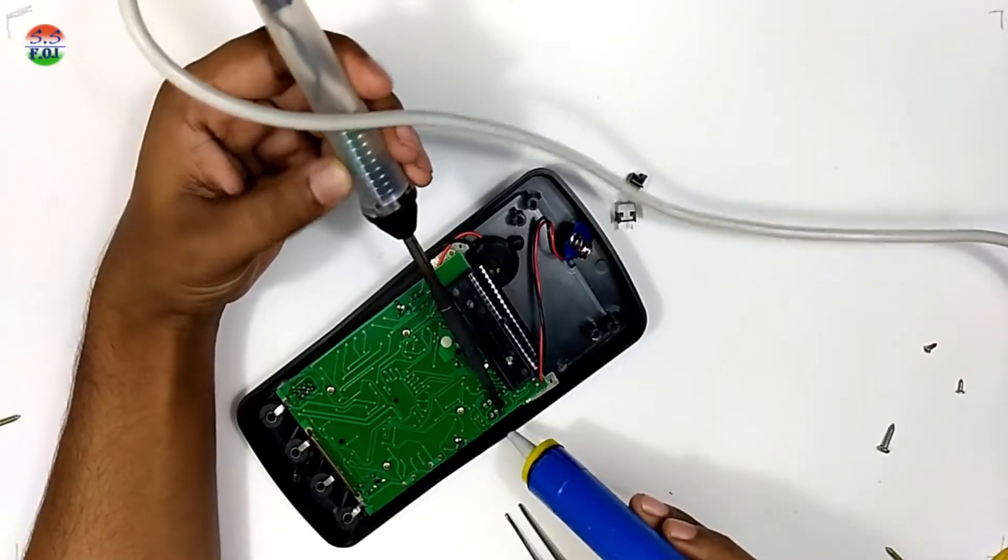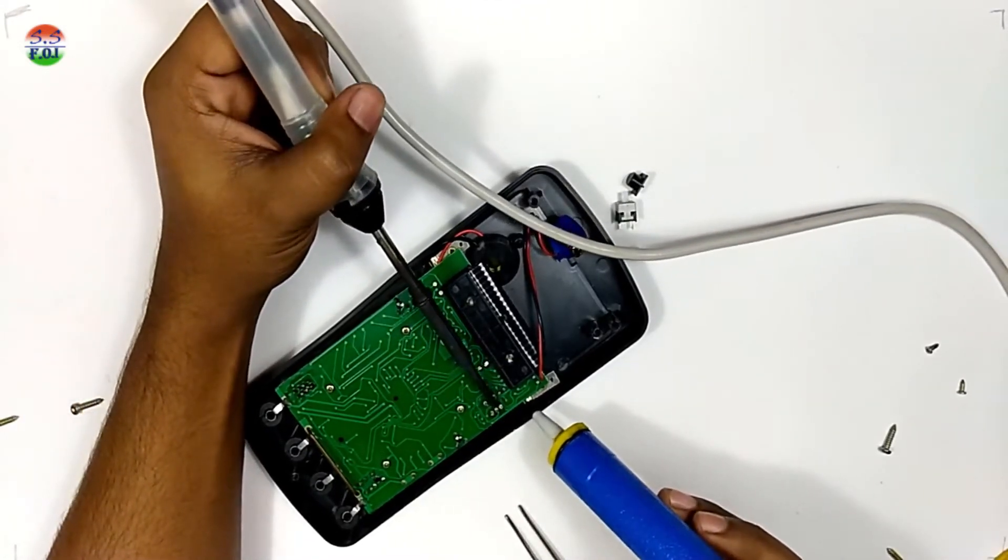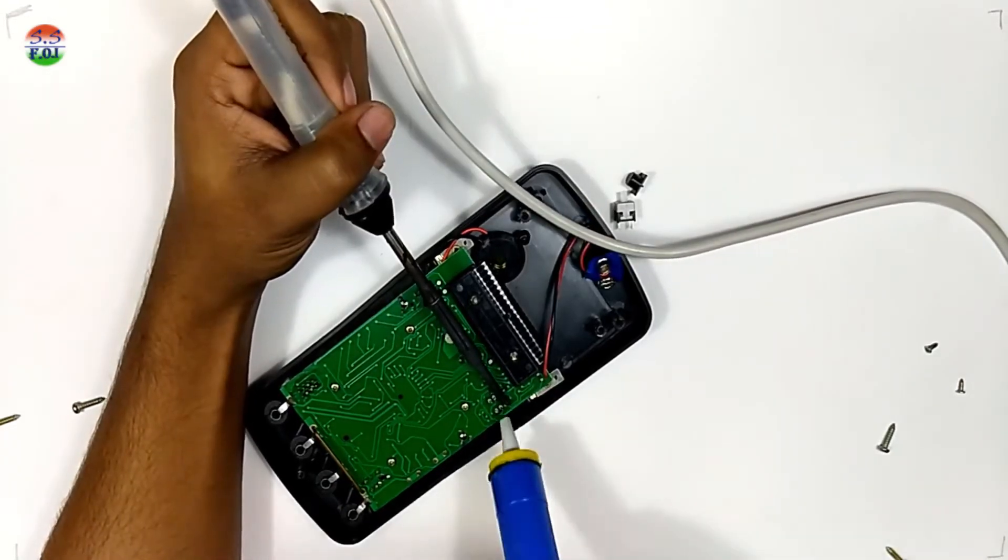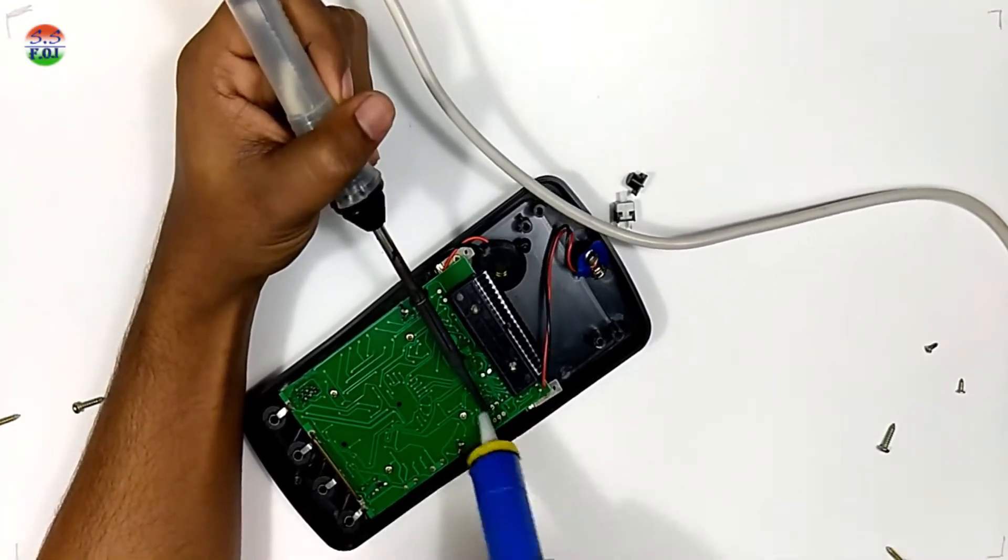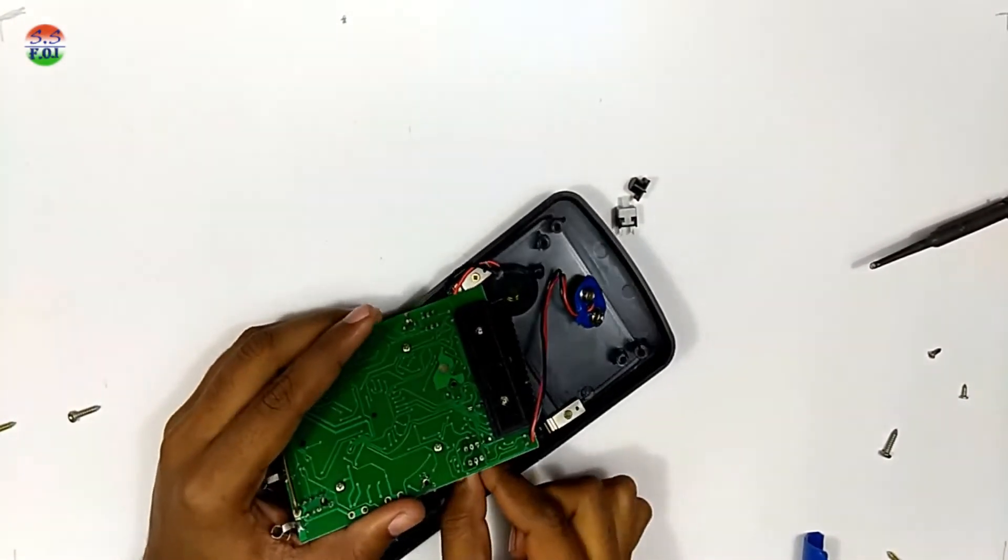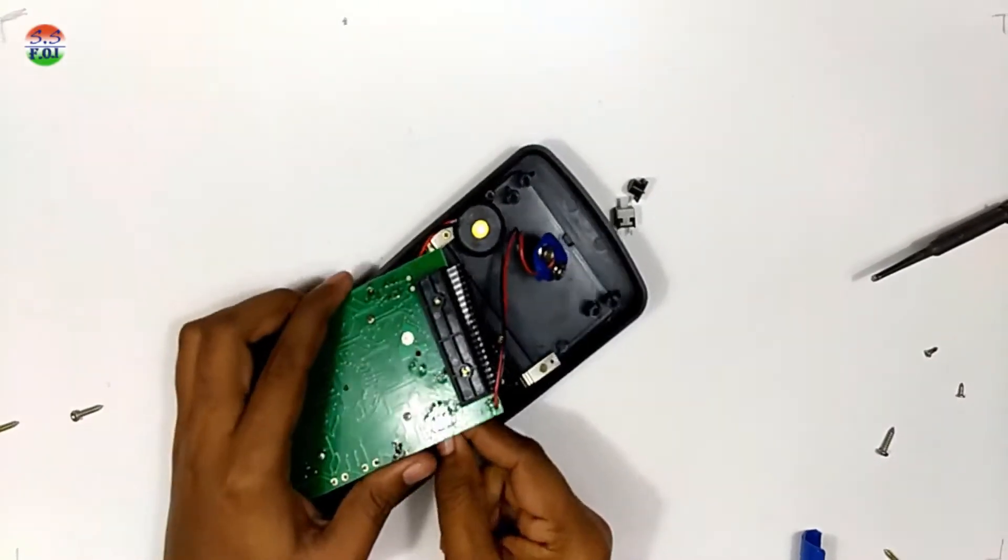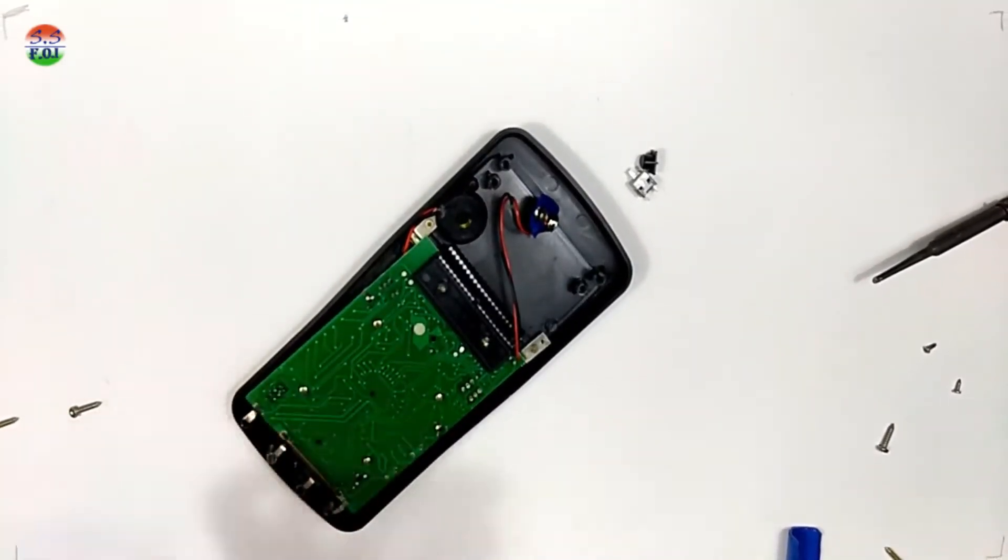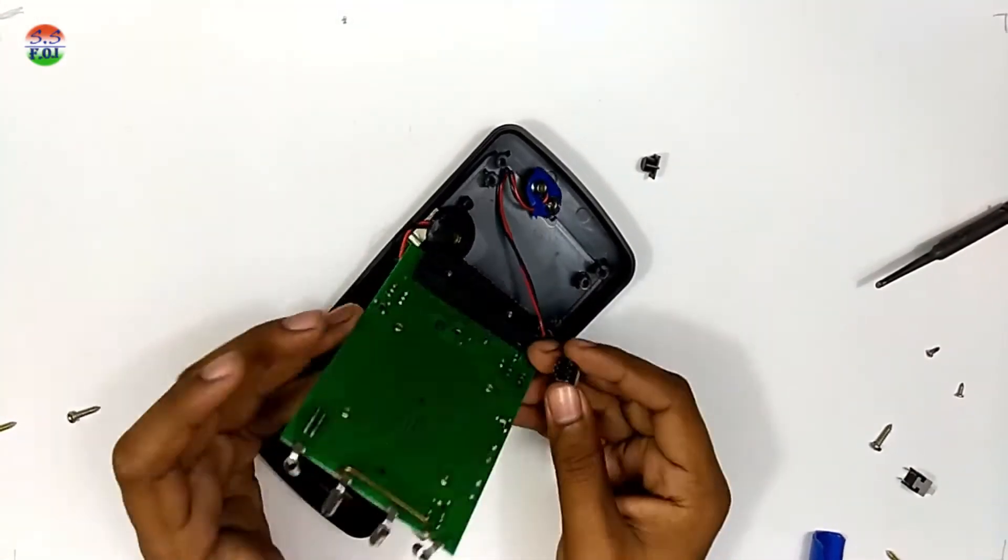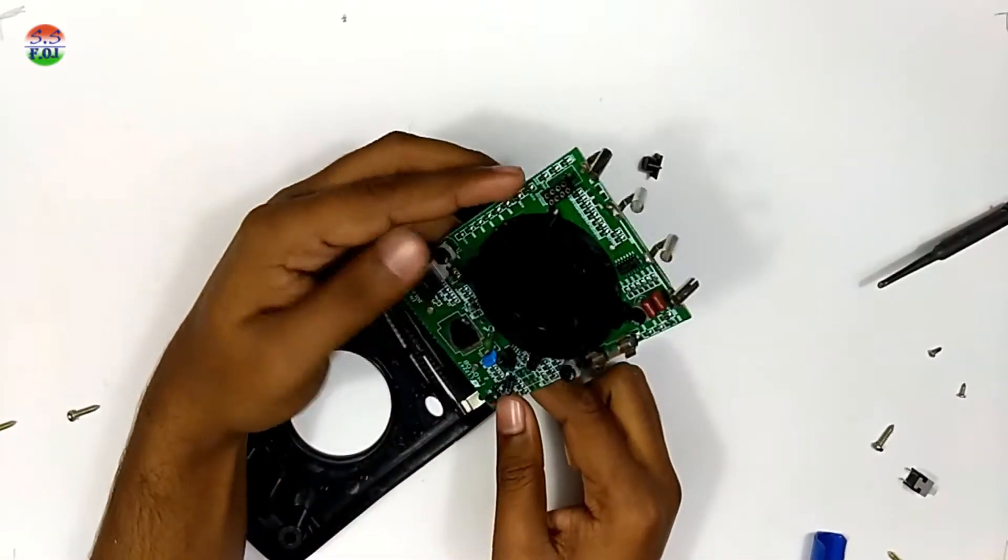Now desolder and pull out the faulty switch and place the new switch and solder it.